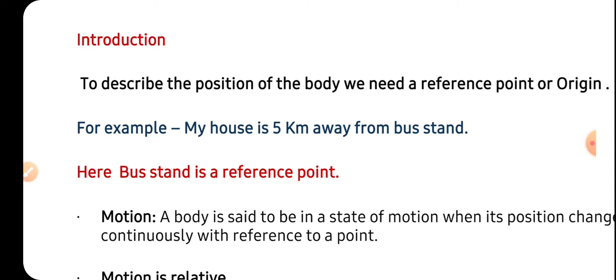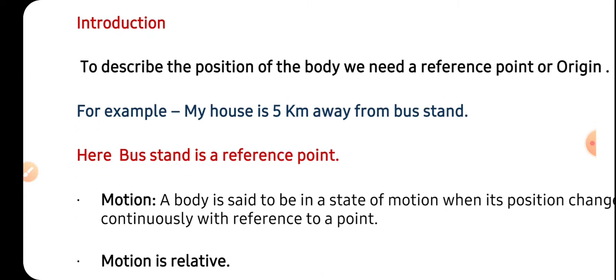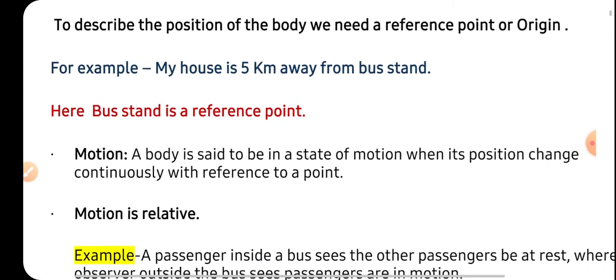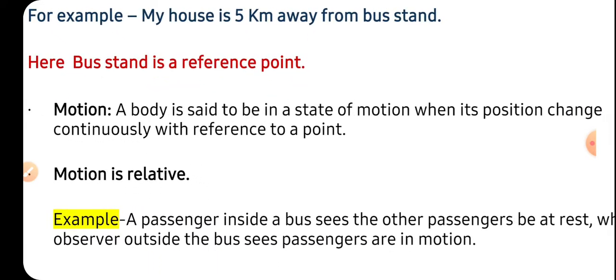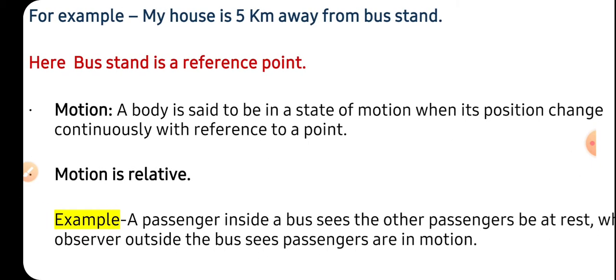The reference point is important for us to locate the position of the body and to understand the motion also. When we say the body is in motion, let us discuss motion. The body is said to be in motion when it changes its position continuously with respect to the reference point. Like a body is at position A, and from that position the body changes its position to B. It means it has changed the position from its reference point. When the body changes its position from its origin, then we say that the body is in motion.